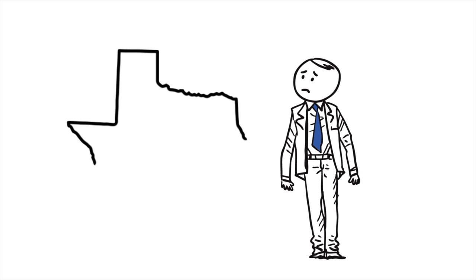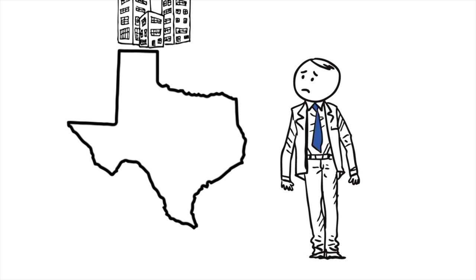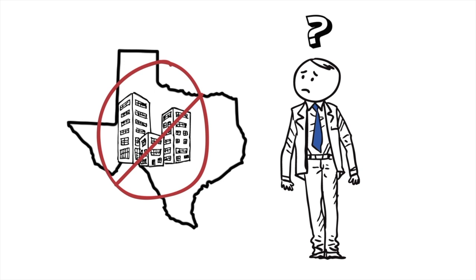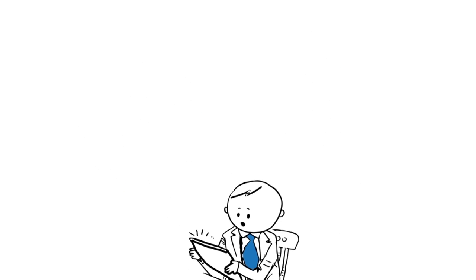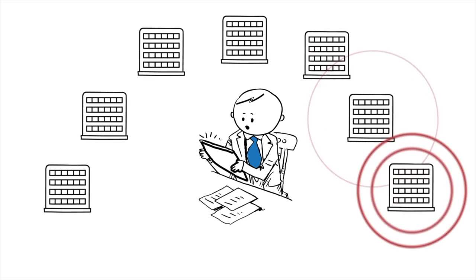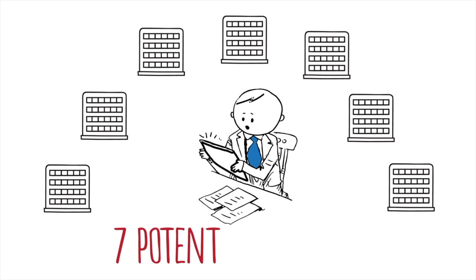Bob finds out his current vendor doesn't provide service in one of the new locations. He doesn't know who operates in Dallas. So Bob researches it for two weeks and finds seven potential vendors. And time is running out.